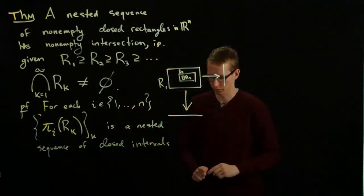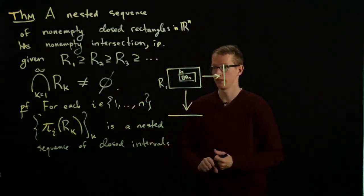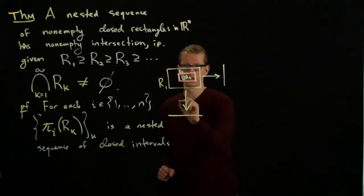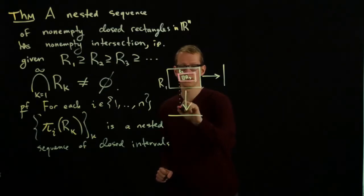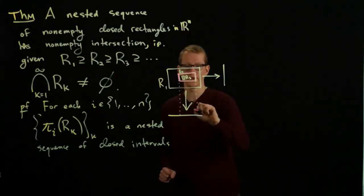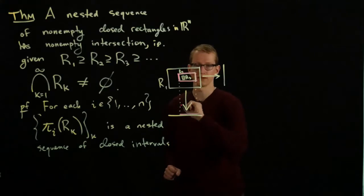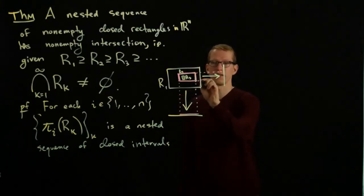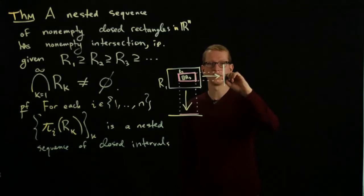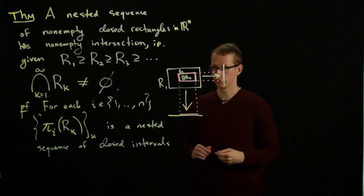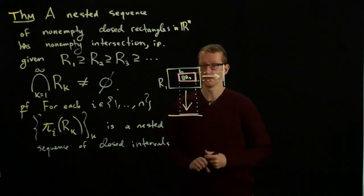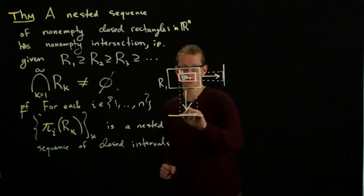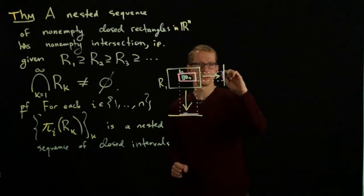Going back to this picture, if the second rectangle was drawn in pink, then the second interval would look like, we would project it onto the first factor, and that would look something like this. Similarly, in this direction we can project, and we'd get a nested sequence of intervals in all of the different coordinates. Here's the next one, and here's the next one.